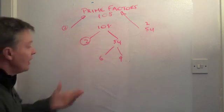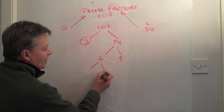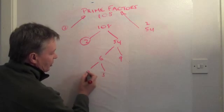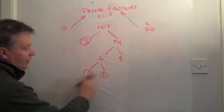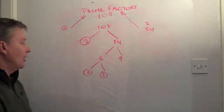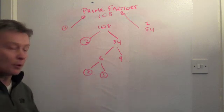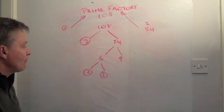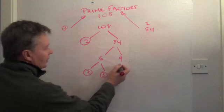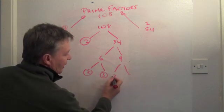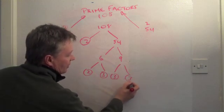Nor is 6, nor is 9. Because with 6, I can multiply 2 times 3, and both of those are prime numbers. Numbers that are only divisible by themselves and 1. 9 can be multiplied as 3 times 3.